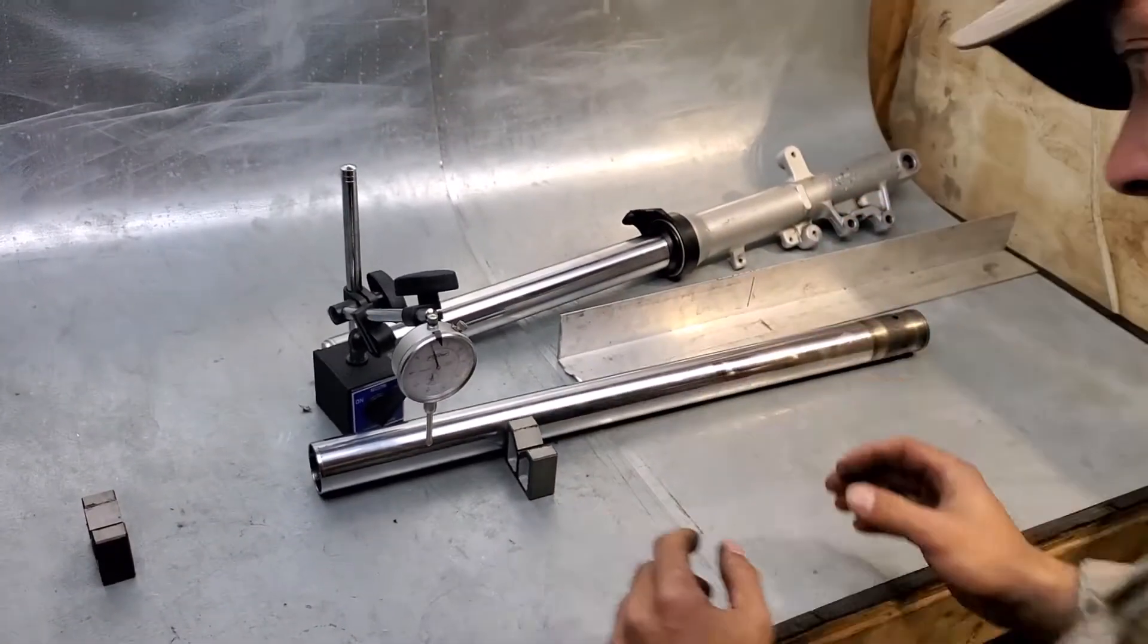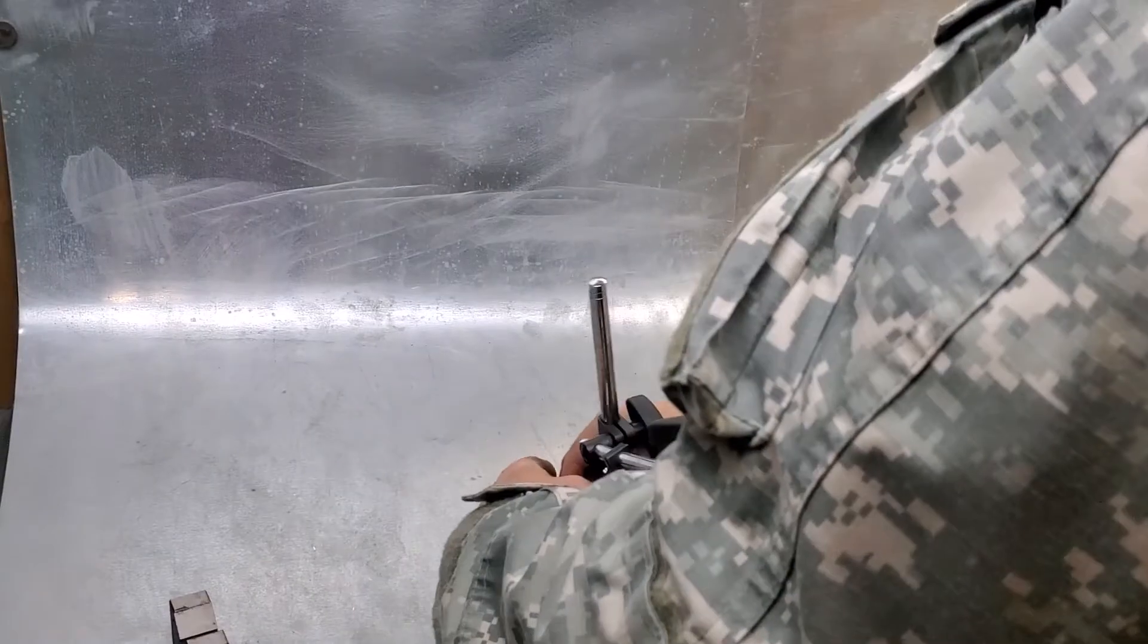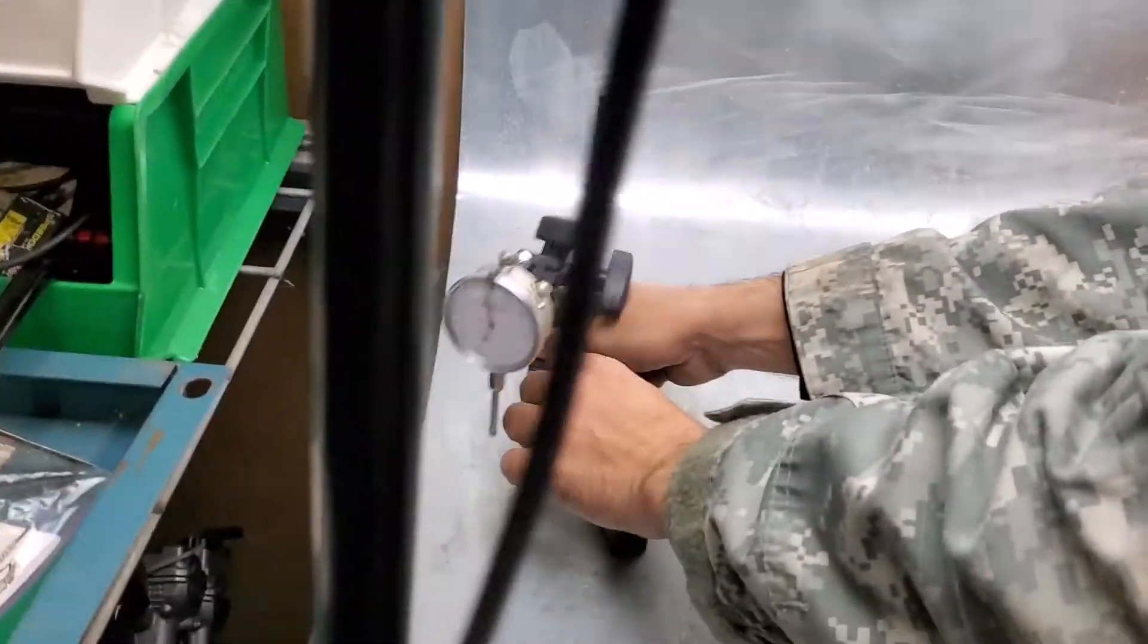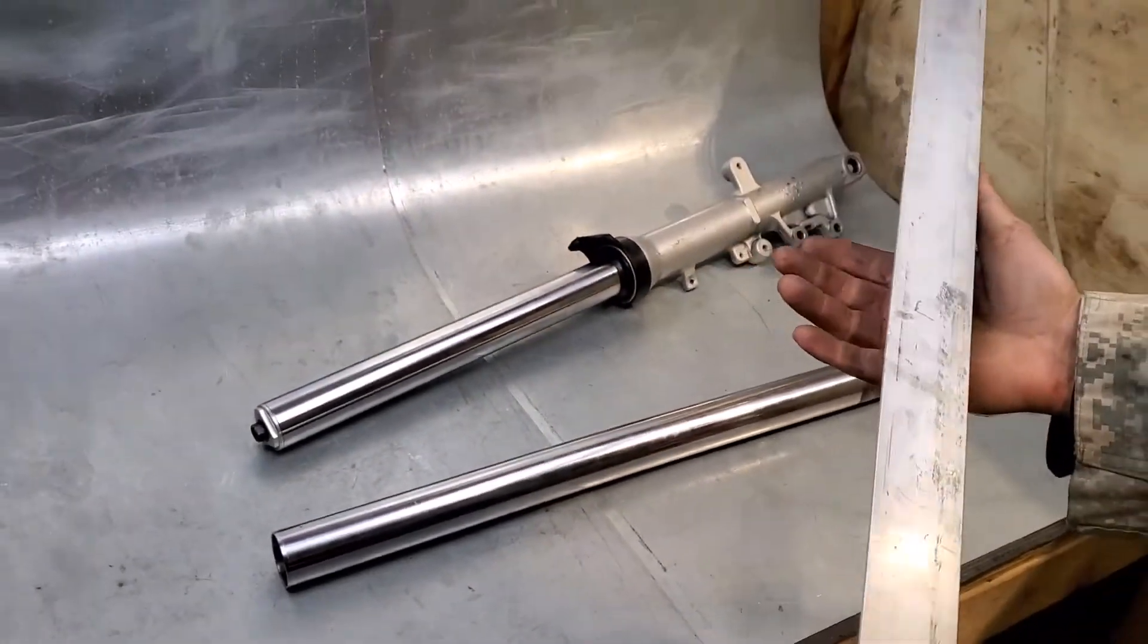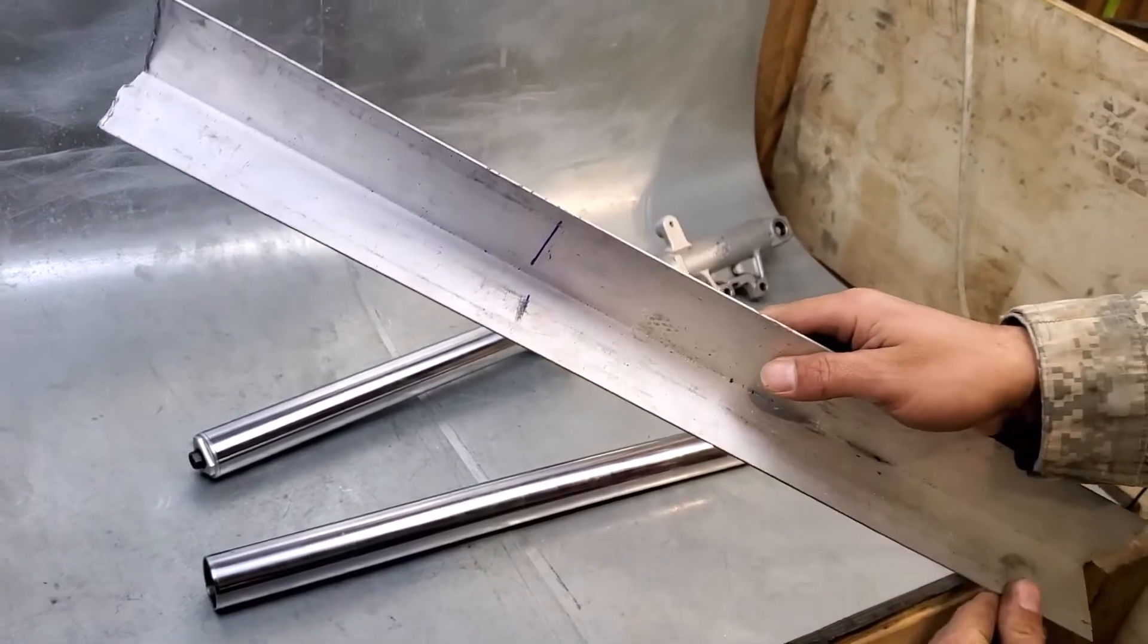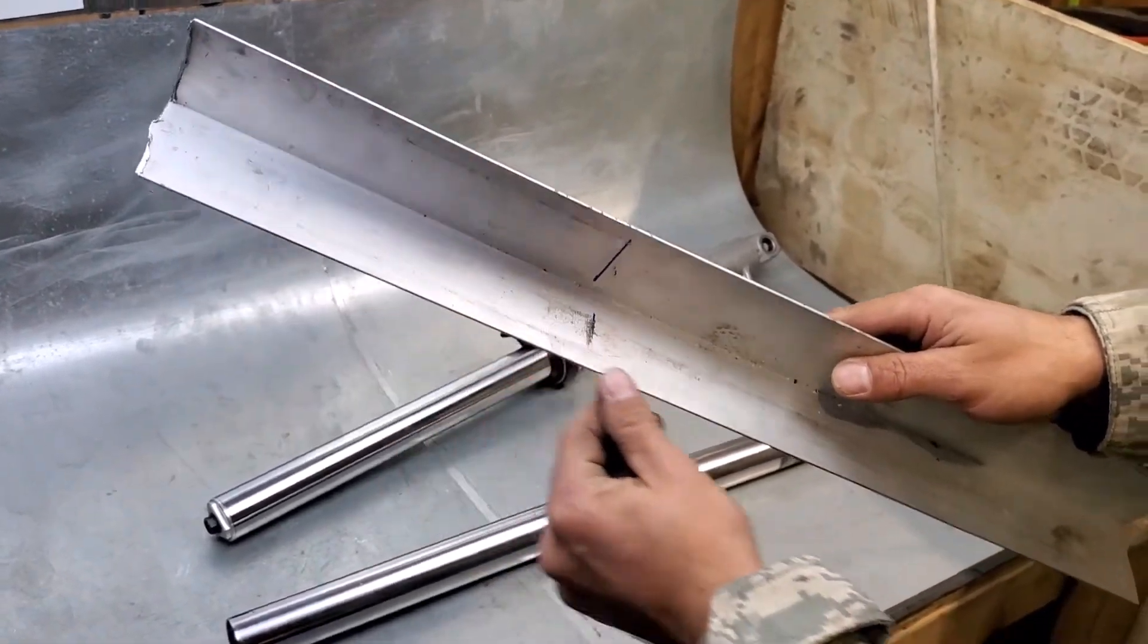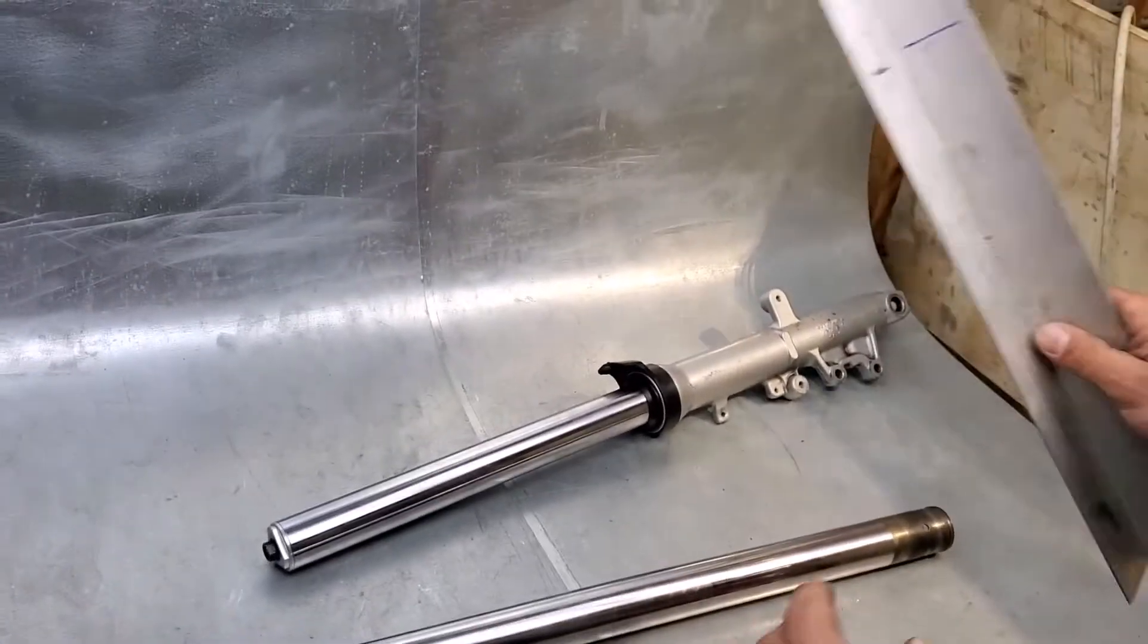All right so hey dial indicators are expensive, let's do something cheaper like two dollars at Home Depot probably. So what I did was I just checked that there were no burrs on the edge and I'm gonna use it as a straight edge.